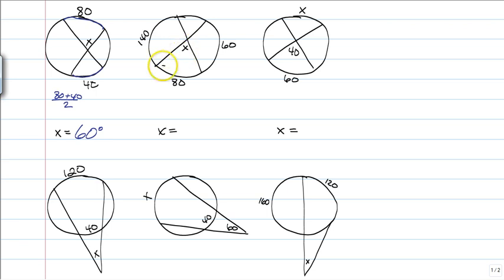So this x is made up by this arc and that arc. Now, I understand we don't have that other arc. So there's two different ways you can do it. The first thing you can do is remember that circles add up to 360 degrees. So you could subtract all of these from 360 and find that guy.